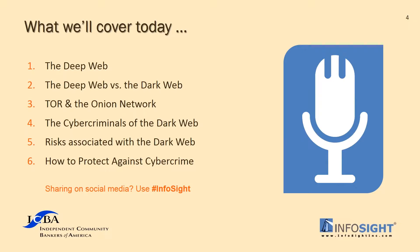We're going to talk about the deep web as it's known today, and the difference between what is the deep web and what is the dark web. There's been a little bit of confusion regarding that topic in the past, and we want to clarify that for everyone. We're also going to talk about TOR, or the Onion Network, and how encrypted messages are sent, some of the cyber criminals and their use of the dark web, the risks associated with it, and how to protect ourselves from this cyber crime that's continuing to grow exponentially in this underground world.